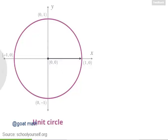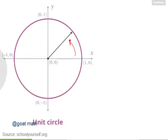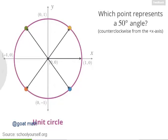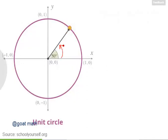With the unit circle, we define angles as being counterclockwise from the positive x-axis. Rotating the way a clock goes is clockwise; going the other way is counterclockwise. Take a look at these four points on the circumference of the unit circle. Which of these points represents a 50 degree angle — in other words, which one is 50 degrees counterclockwise from the positive x-axis? Well done! This point up here is at 50 degrees, meaning it makes a 50 degree angle with the positive x-axis in the counterclockwise direction.